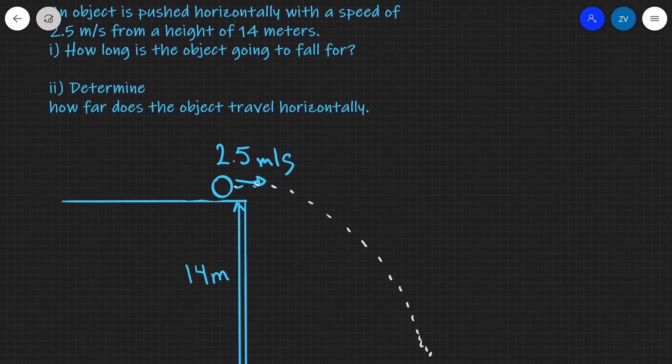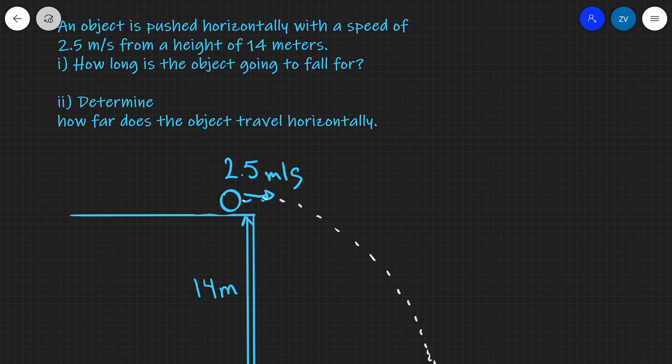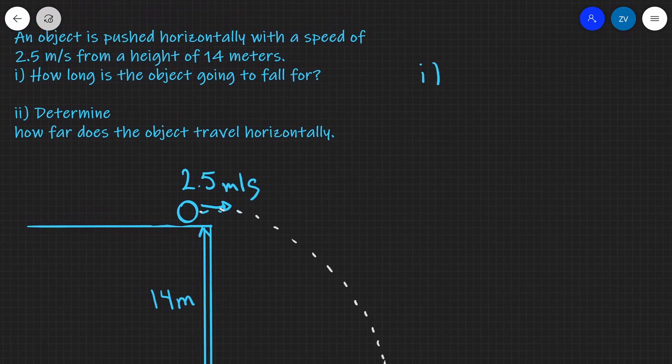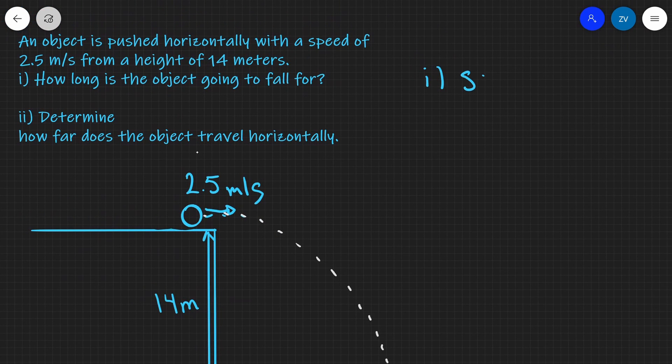So let's focus on the first one and determine how long is the object going to fall for. In order to do that we're going to need to apply the Suvat equations and I'm going to use s is equal to ut plus half a t squared.